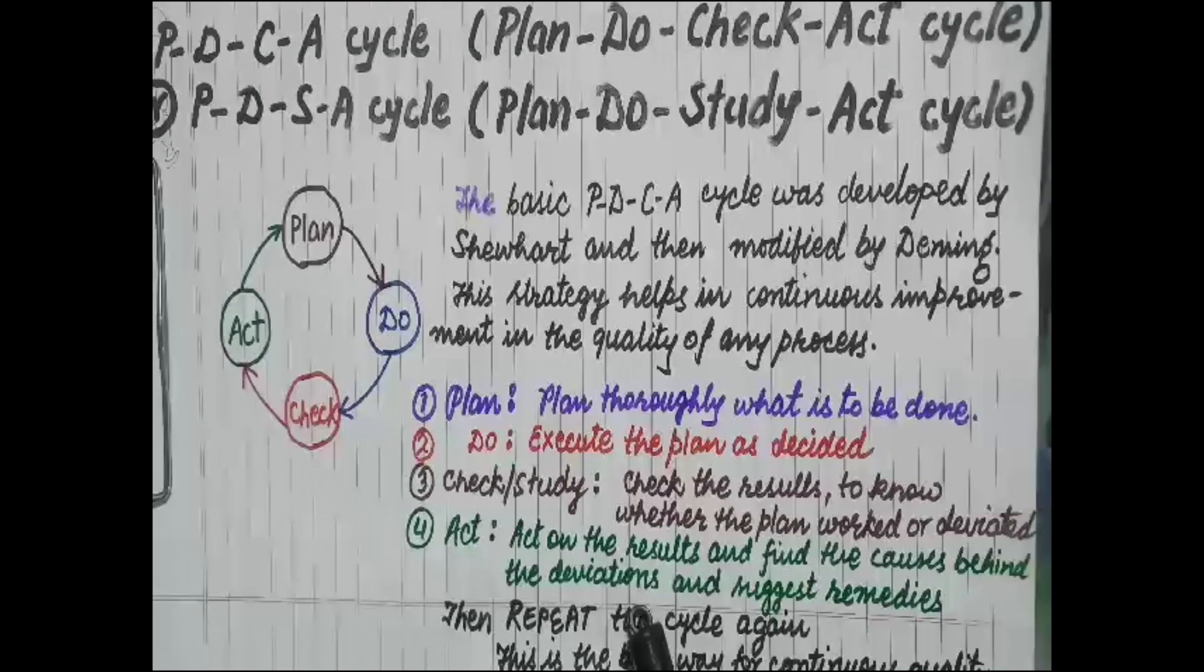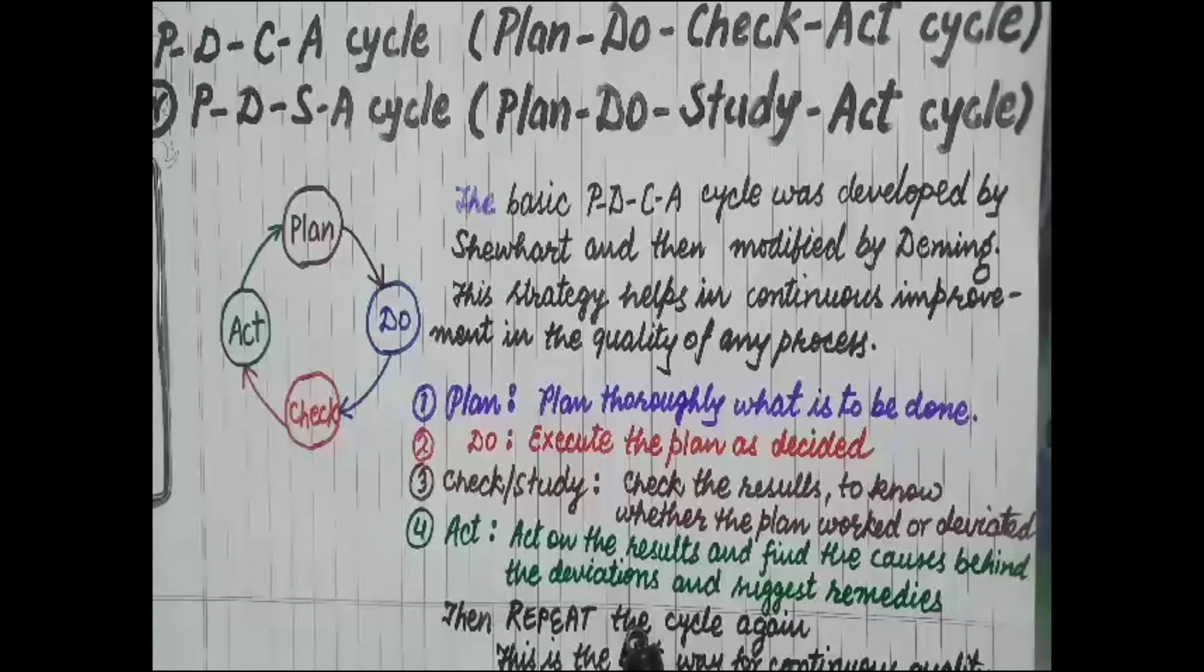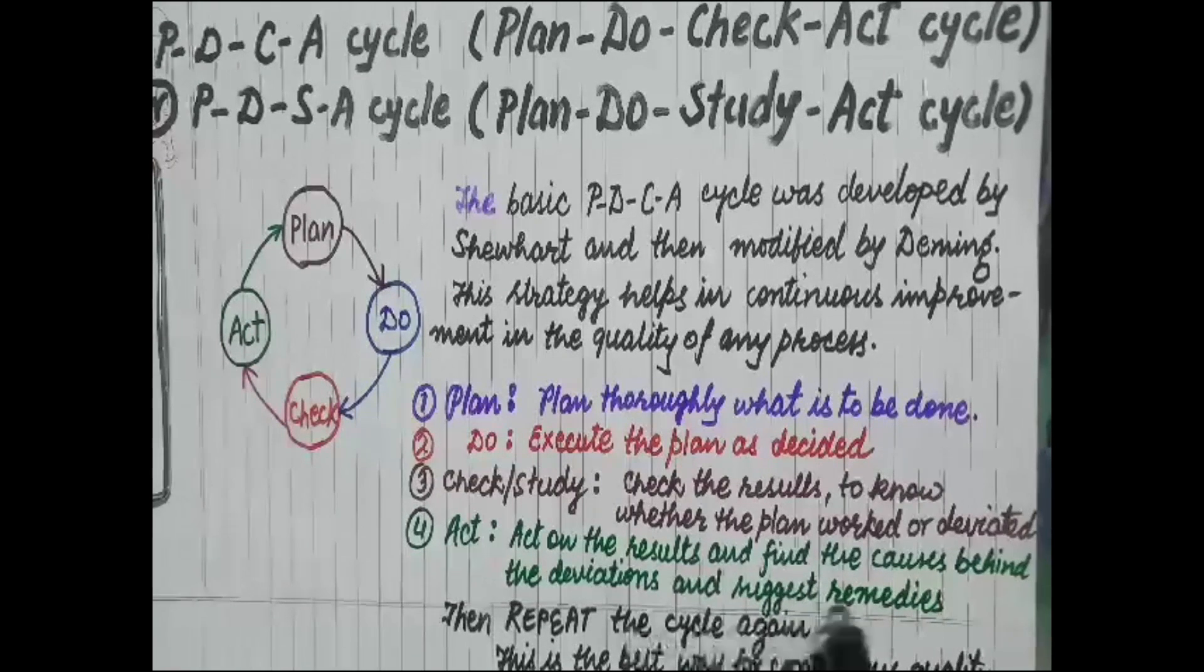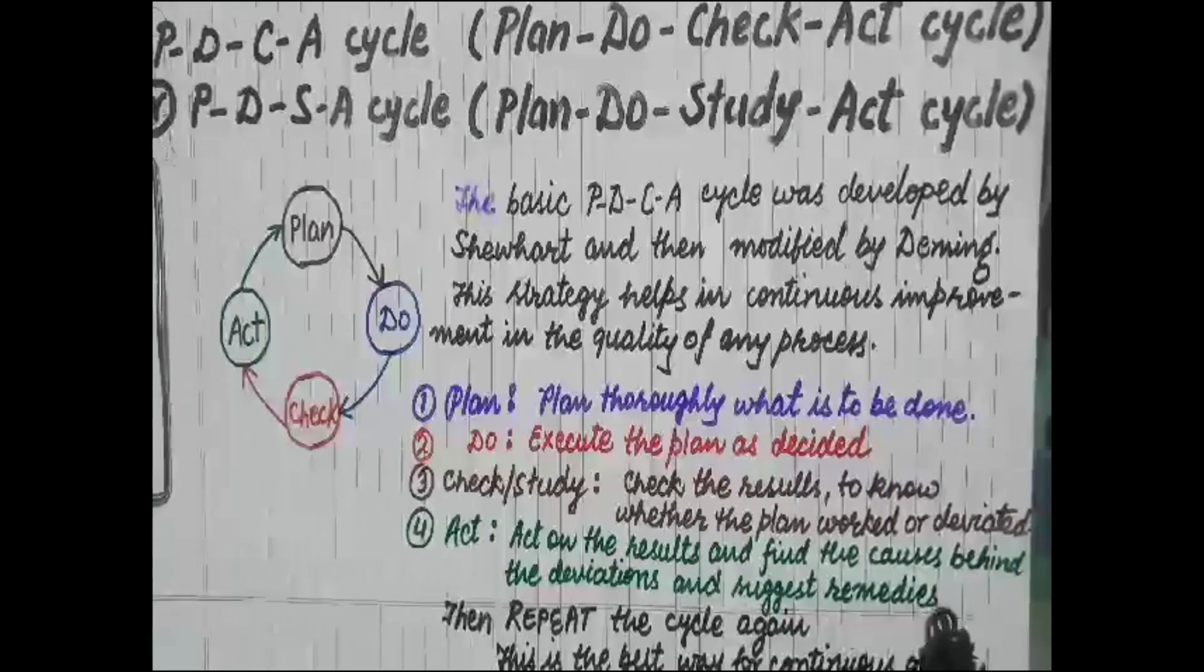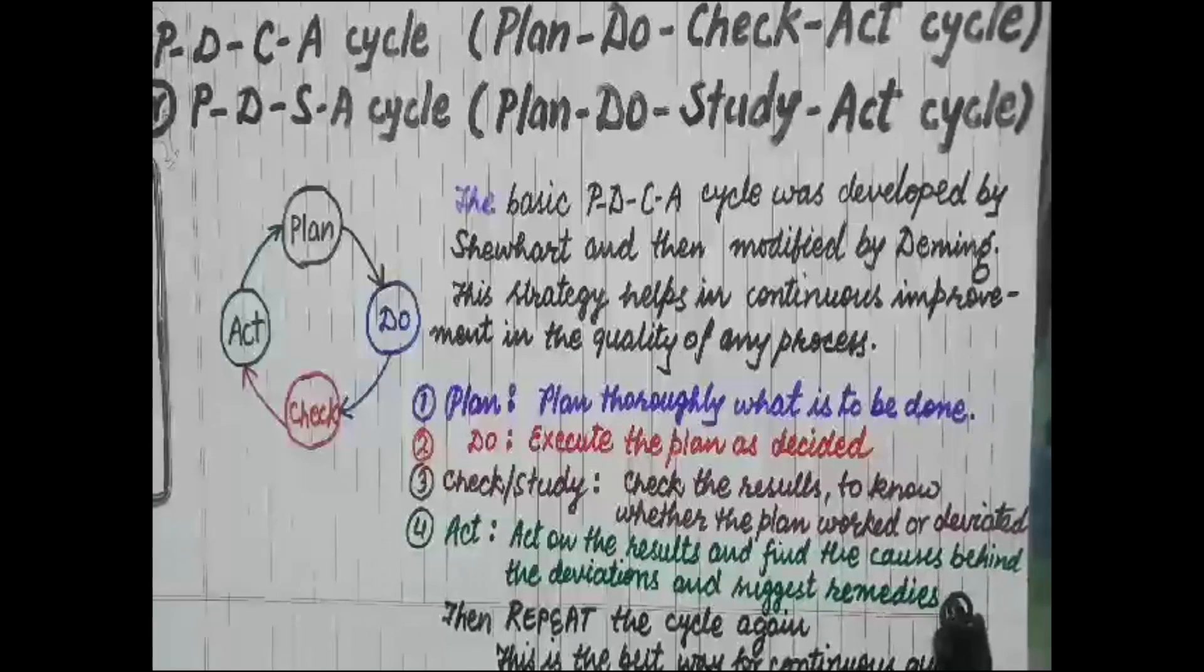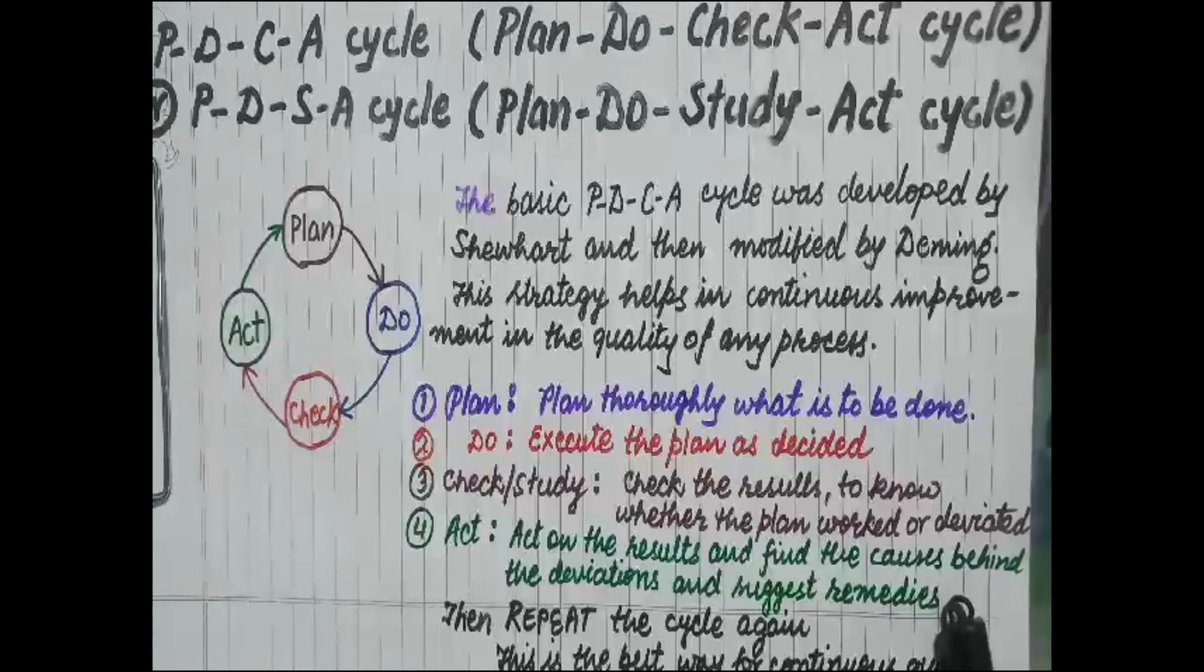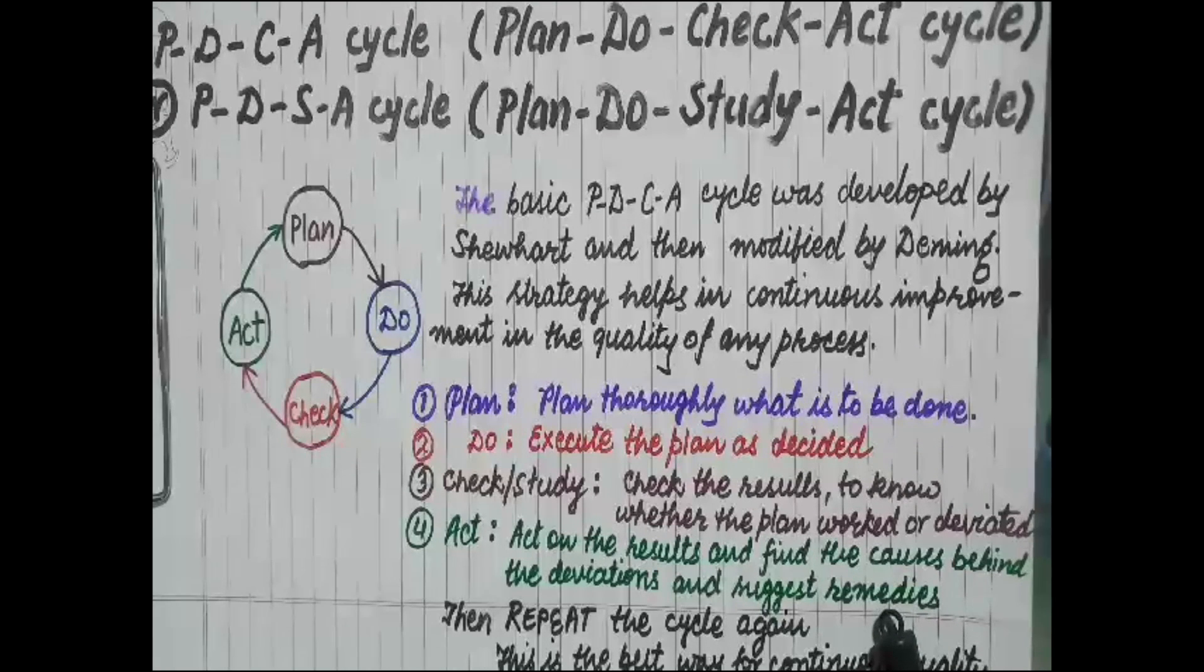If there is no dimensional accuracy, we have to check if the measuring instrument that was used was calibrated or not. So we have to find the causes behind the deviation and suggest remedies, so that next time when the plan is framed, those suggestions and remedies